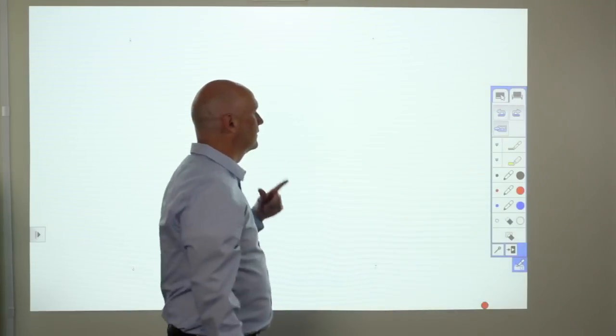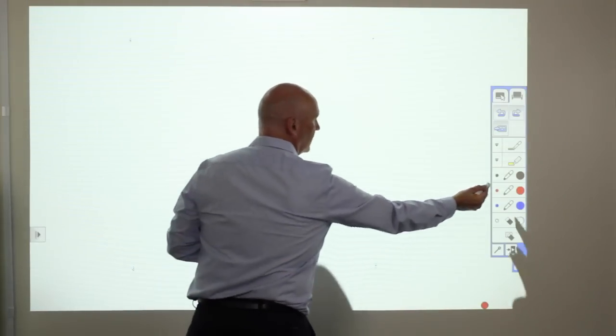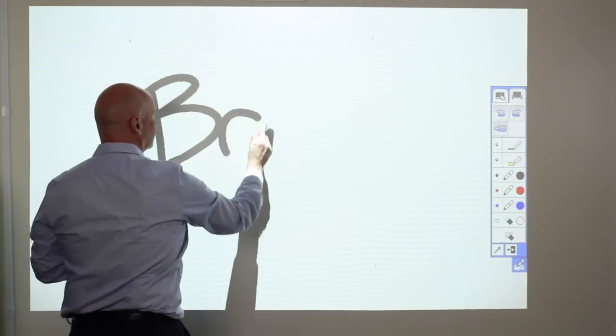If I select the whiteboard, now I just have a digital whiteboard, at which point I can begin writing directly onto the surface.